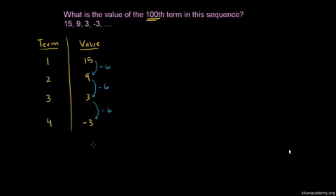So it looks like every term you subtract 6. The second term is 6 less than the first term. The third term is 12 less from the first term — negative 6 subtracted twice. In the third term, you subtract negative 6 twice. In the fourth term, you subtract negative 6 three times.